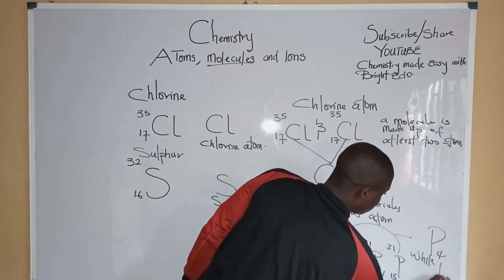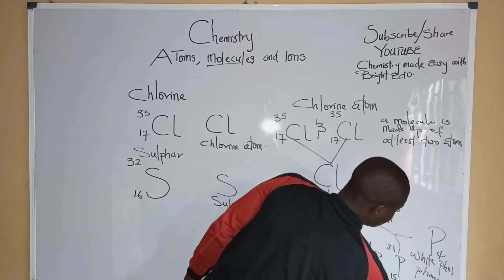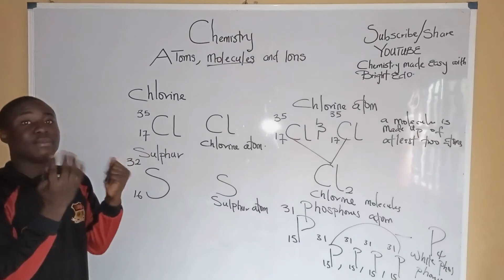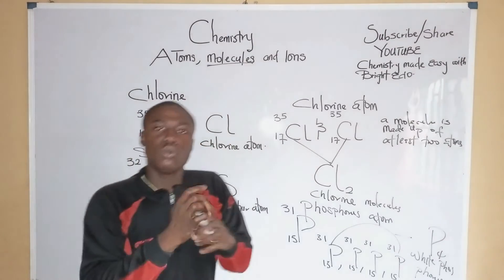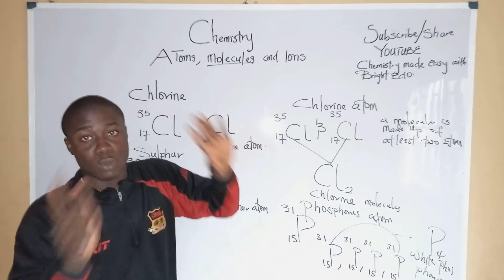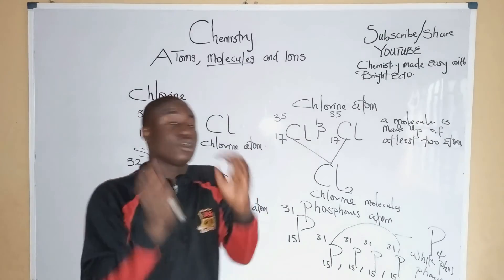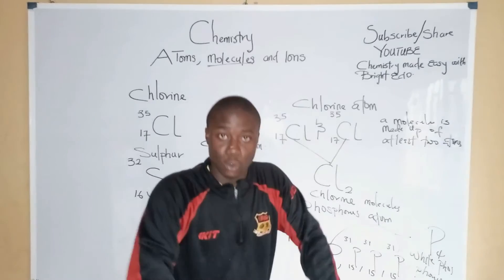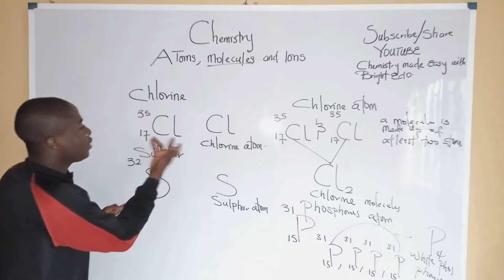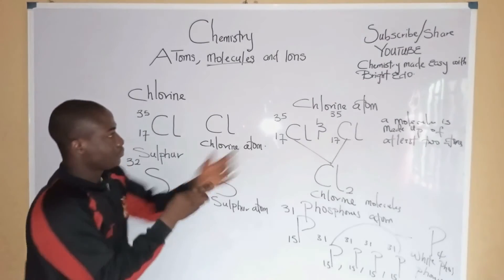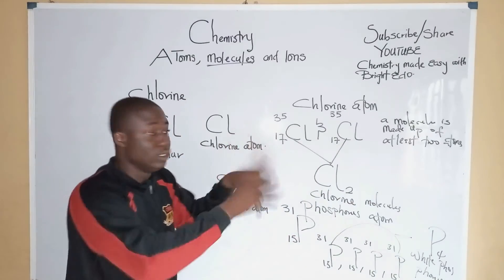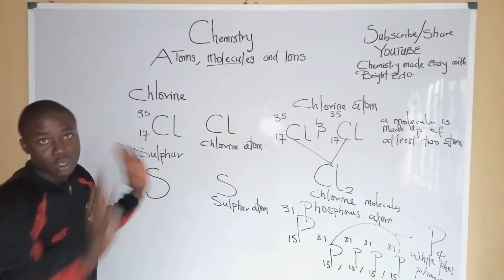It is called white phosphorus, and white phosphorus is toxic. So basically, for atoms, they are single elements. But for molecules, molecules are made up of at least two atoms. A molecule is the smallest particle of a substance that can exist alone or independently and still retain the same chemical identity. For example, this is a chlorine atom, and this is also a chlorine molecule. The chemical identity did not change — it is still chlorine.